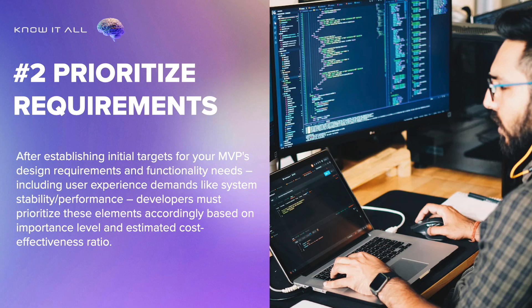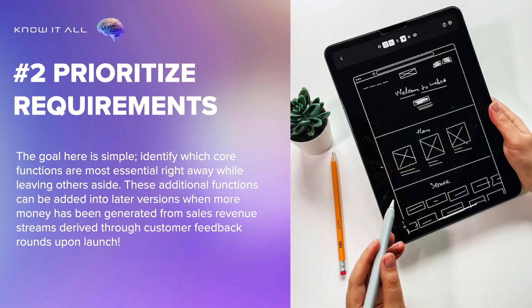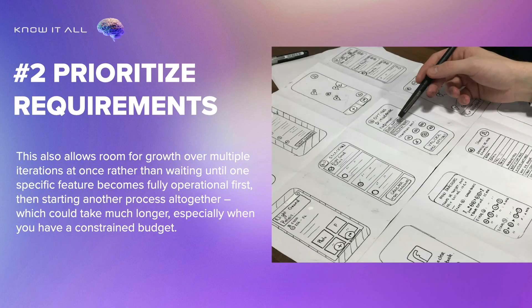Two, prioritize requirements. After establishing initial targets for your MVP's design requirements and functionality needs, including user experience demands like system stability and performance, developers must prioritize these elements accordingly based on importance level and estimated cost-effectiveness ratio. The goal here is simple: identify which core functions are most essential right away while leaving others aside. These additional functions can be added into later versions when more money has been generated from sales revenue streams through customer feedback rounds upon launch. This also allows room for growth over multiple iterations at once rather than waiting until one specific feature becomes fully operational first, which could take much longer, especially when you have a constrained budget.